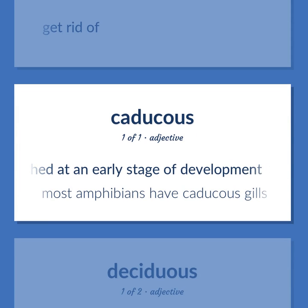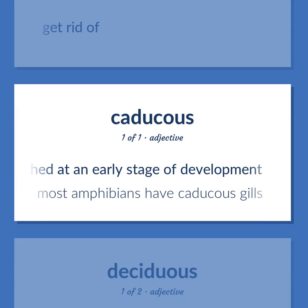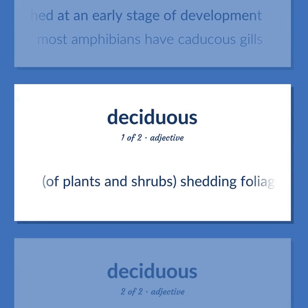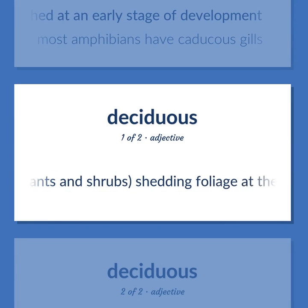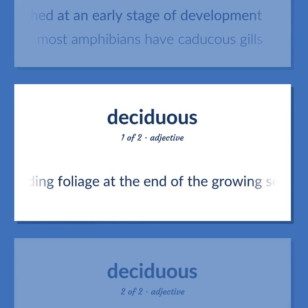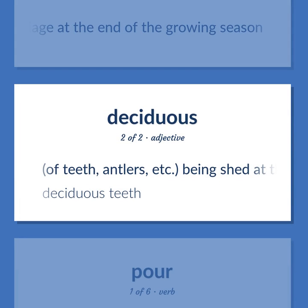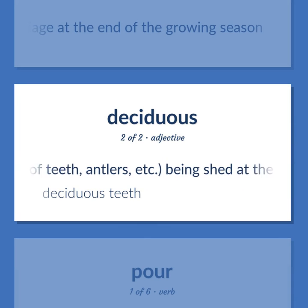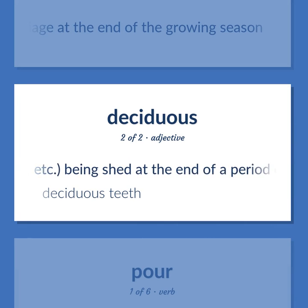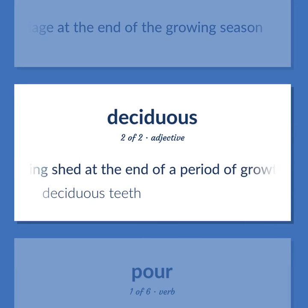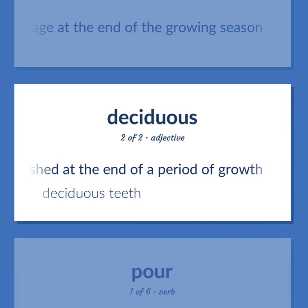Caducous: shed at an early stage of development — most amphibians have caducous gills. Of plants and shrubs, shedding foliage at the end of the growing season. Of teeth, antlers, etc., being shed at the end of a period of growth — deciduous teeth.